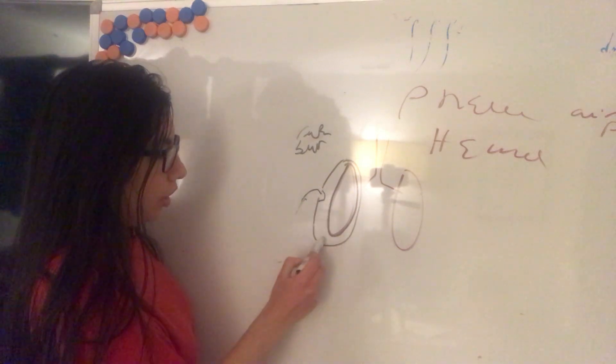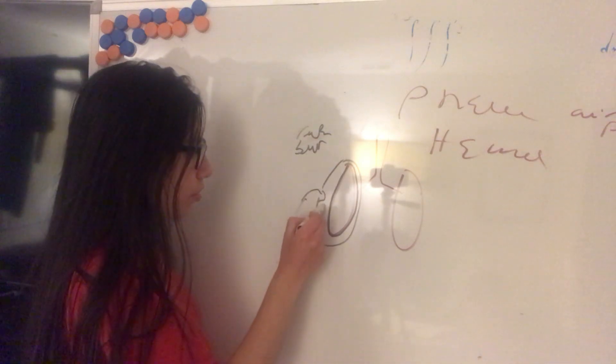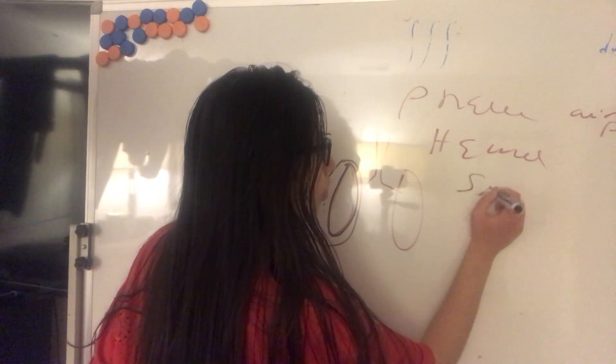So there would be air on the intrapleural space as this air goes inside and goes out. This is just a simple pneumothorax.